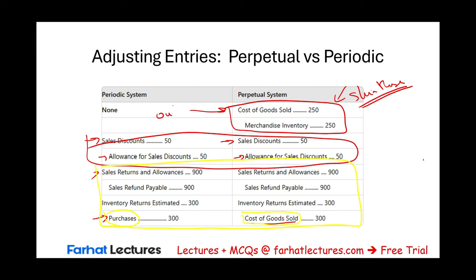We also close Sales Discount and Sales Returns and Allowances — these are contra-revenue accounts with debit balances. You credit them and debit income summary, which reduces income summary. In step three, we transfer the income summary balance to retained earnings. In this example, the income summary has a credit balance of $99,500, representing net income. In step four, we reduce retained earnings and close dividends of $6,000 to zero.